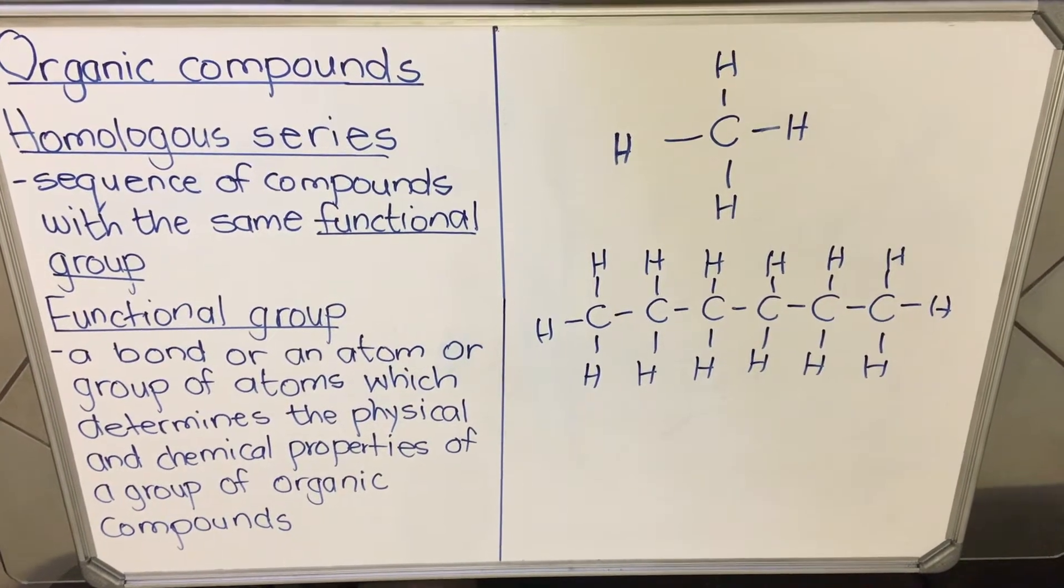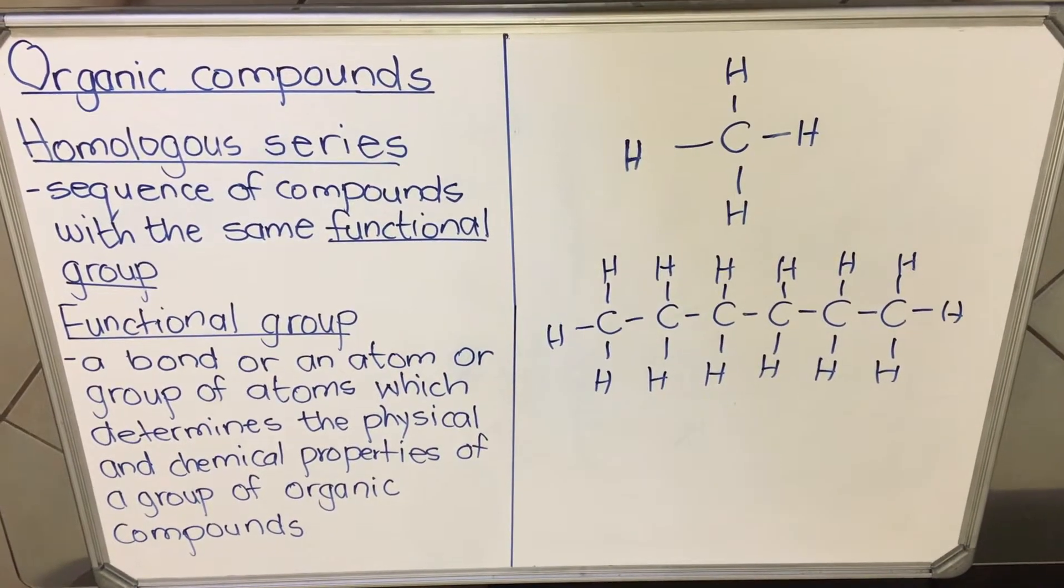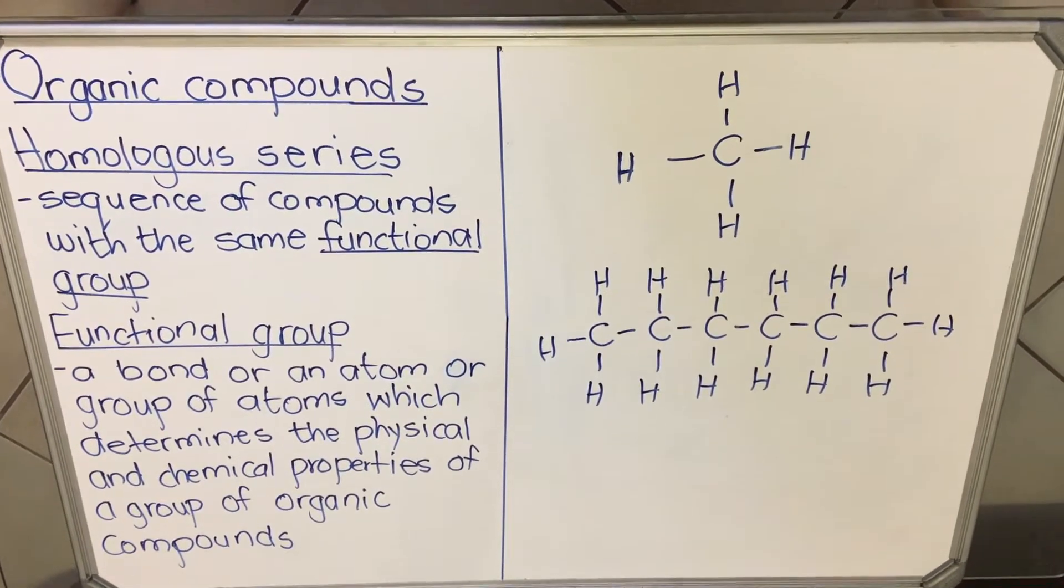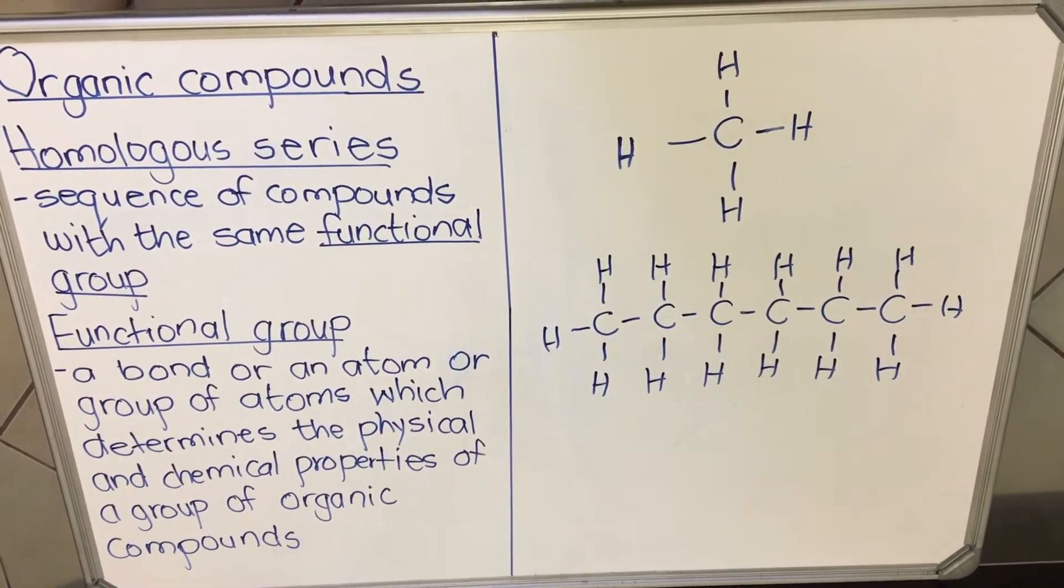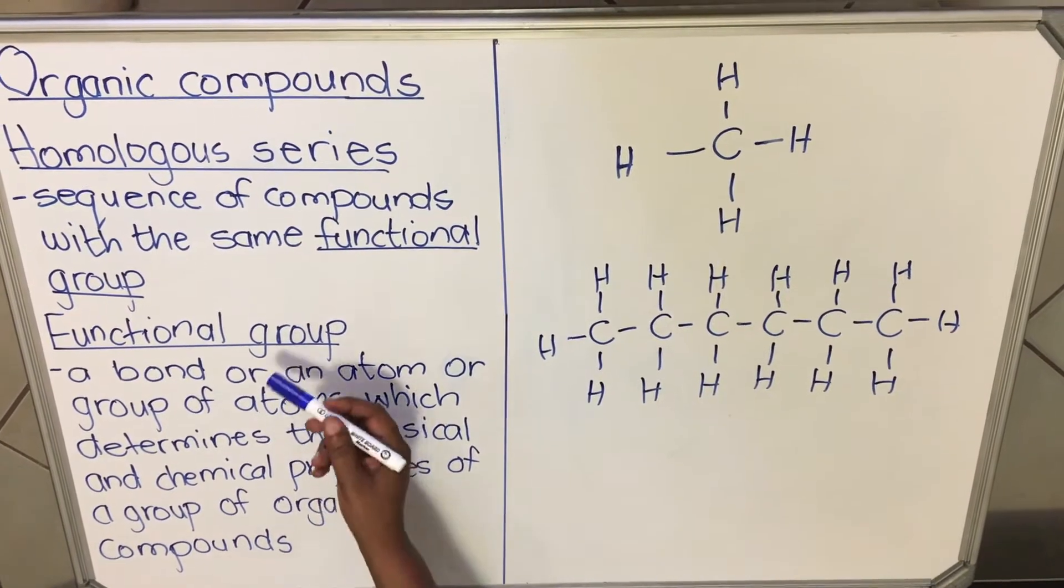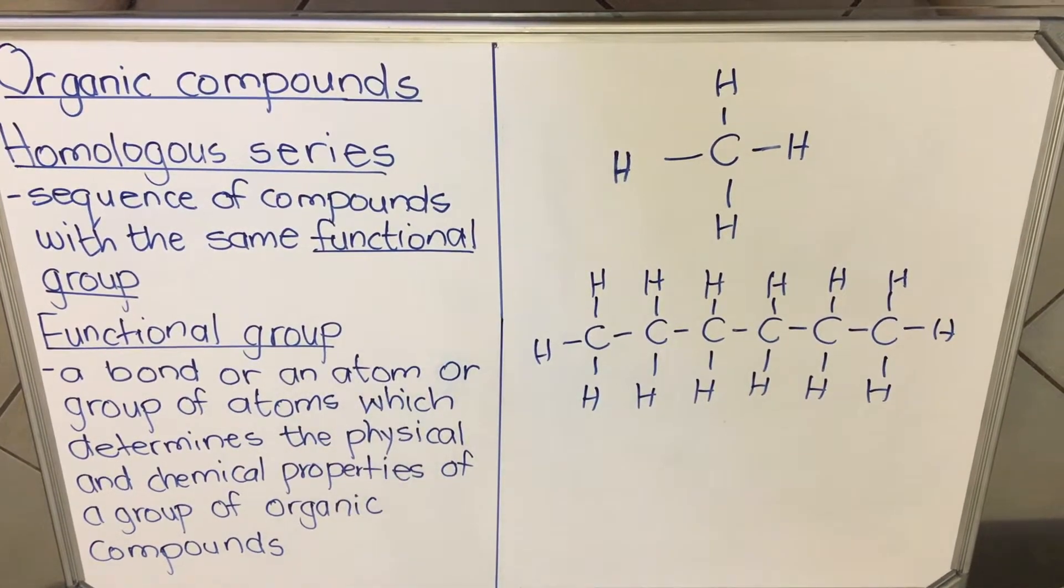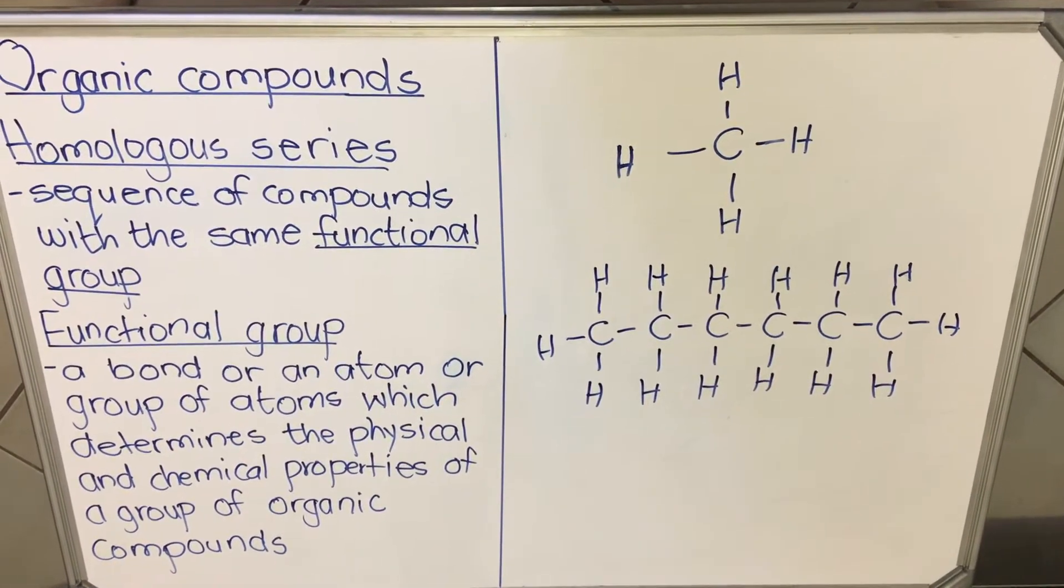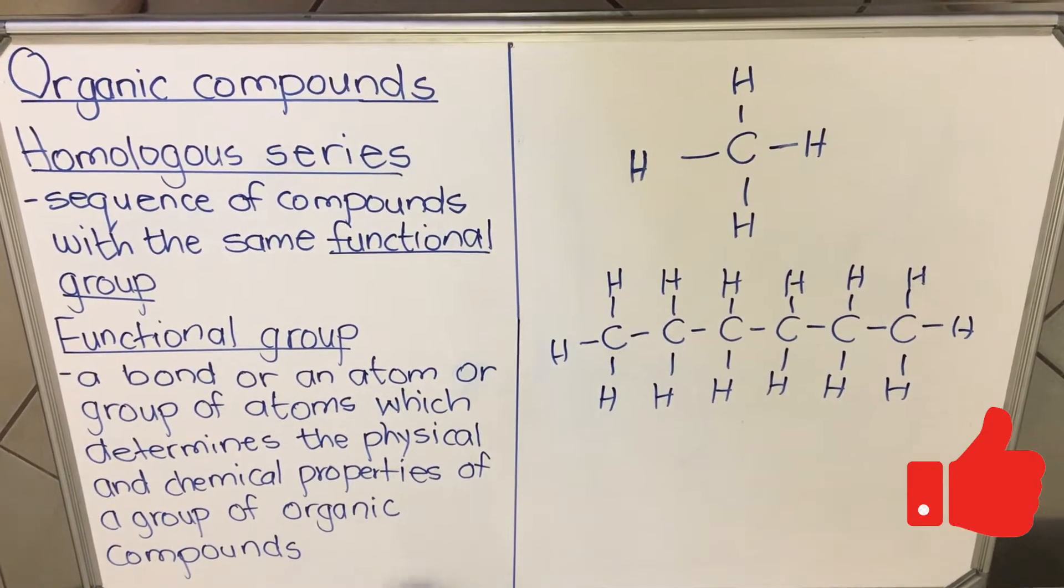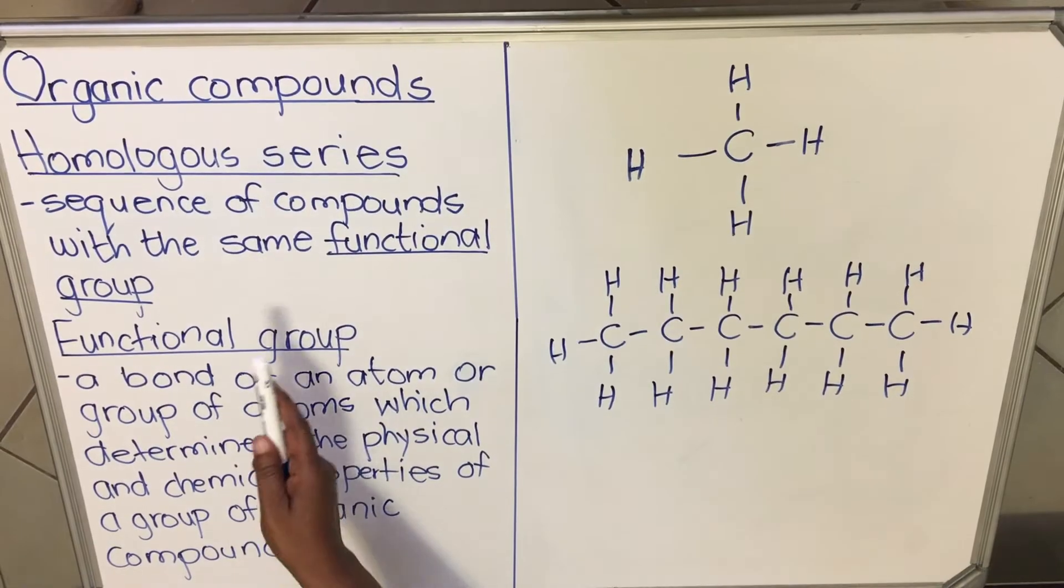Hello everyone, this is a video on organic compounds. Organic compounds belong to homologous series. The definition says it's a sequence of compounds with the same functional group. The next thing we're going to explain is the functional group. So homologous series is a particular family, and those compounds belong to that family. In chemistry we call it homologous series.